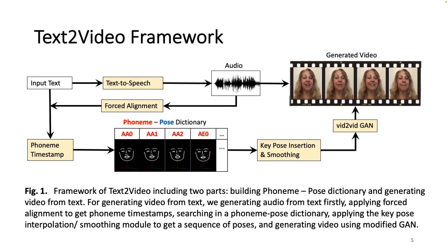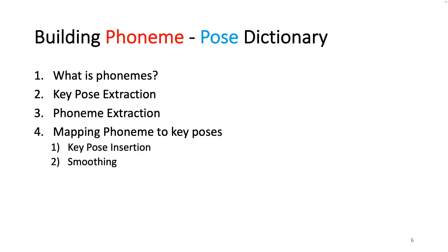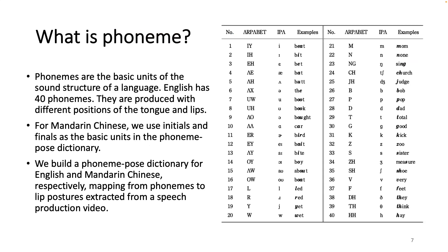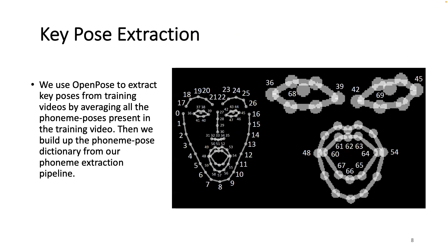Our method contains two key components: building a phoneme pulse dictionary from training data, and training a model to generate video from phoneme pulses. To build the phoneme pulse dictionary, we need to know what phonemes are. Phonemes are the basic units of the sound structure of a language. English has 44 phonemes. They are produced with different positions of the tongue and lips. For Mandarin Chinese, we use initials and finals as the basic units in the phoneme pulse dictionary. We build a phoneme pulse dictionary for English and Mandarin Chinese respectively, mapping from phoneme to lip posture extracted from a speech production video. We use OpenPose to extract key poses from training video by averaging all the phoneme pulses present in the training video, then build up the phoneme pulse dictionary from our phoneme extraction pipeline.